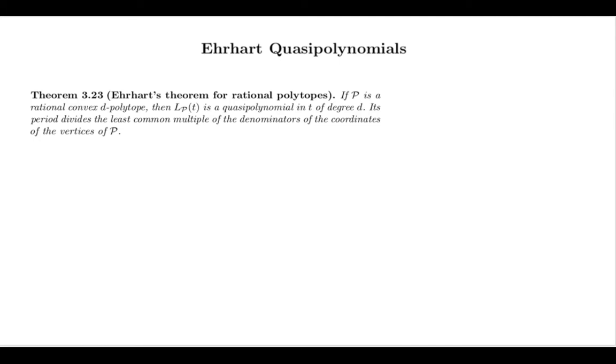So let's say k is the denominator of my polytope. Then what this theorem predicts is that the lattice point enumerator should be a quasi-polynomial of period dividing k. And I want to think about this quasi-polynomial as a list of polynomials that run through cyclically as t increases and the cycle length is k.